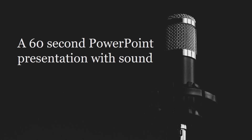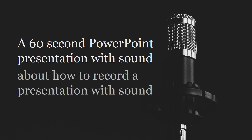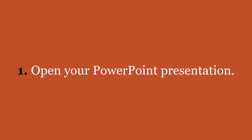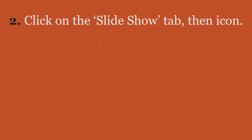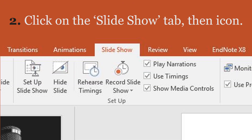A 60 second PowerPoint presentation with sound about how to record a presentation with sound. Step 1: open your PowerPoint presentation. Click on the Slideshow tab and then on the record icon.